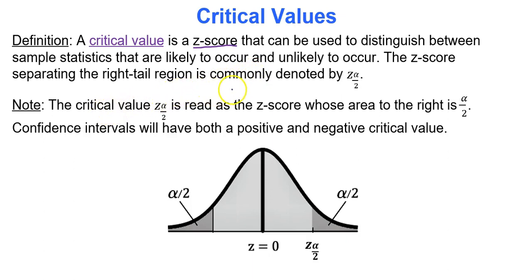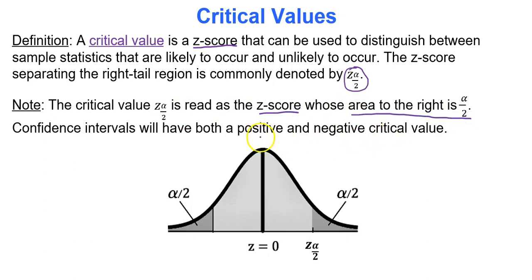The z-score separating the right-tail region is commonly denoted by z sub alpha over 2. This critical value, used to help calculate the error of our confidence interval, is read as the z-score whose area to the right is alpha over 2. Confidence intervals will have both a positive and negative critical value, but we focus on the positive critical value when doing our calculation.